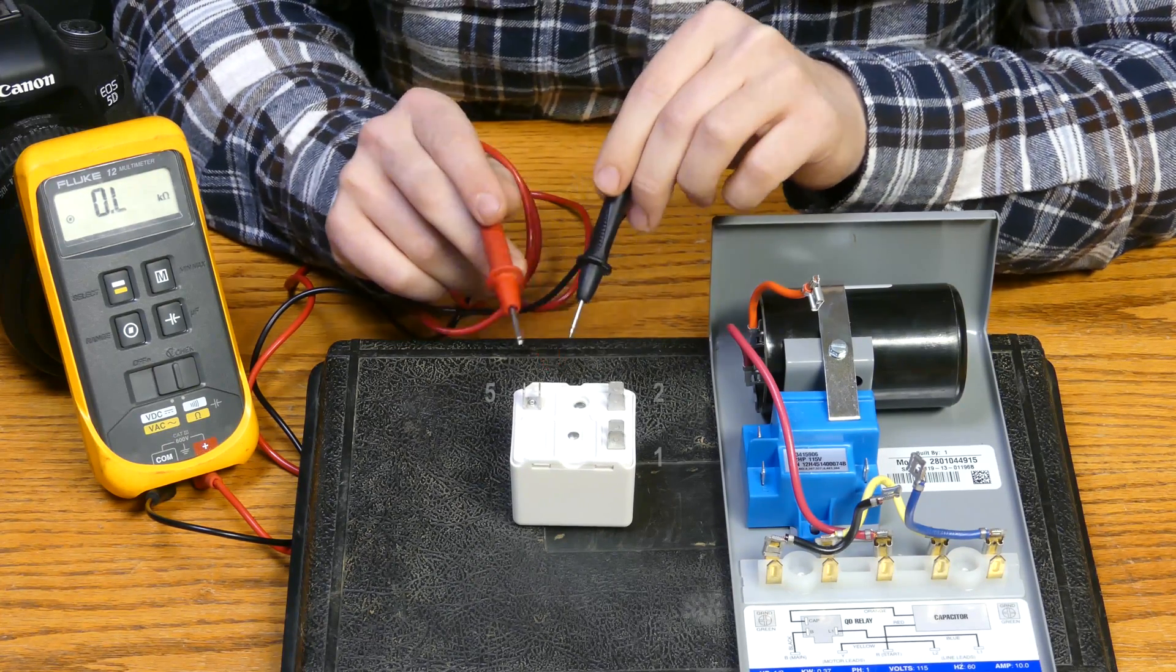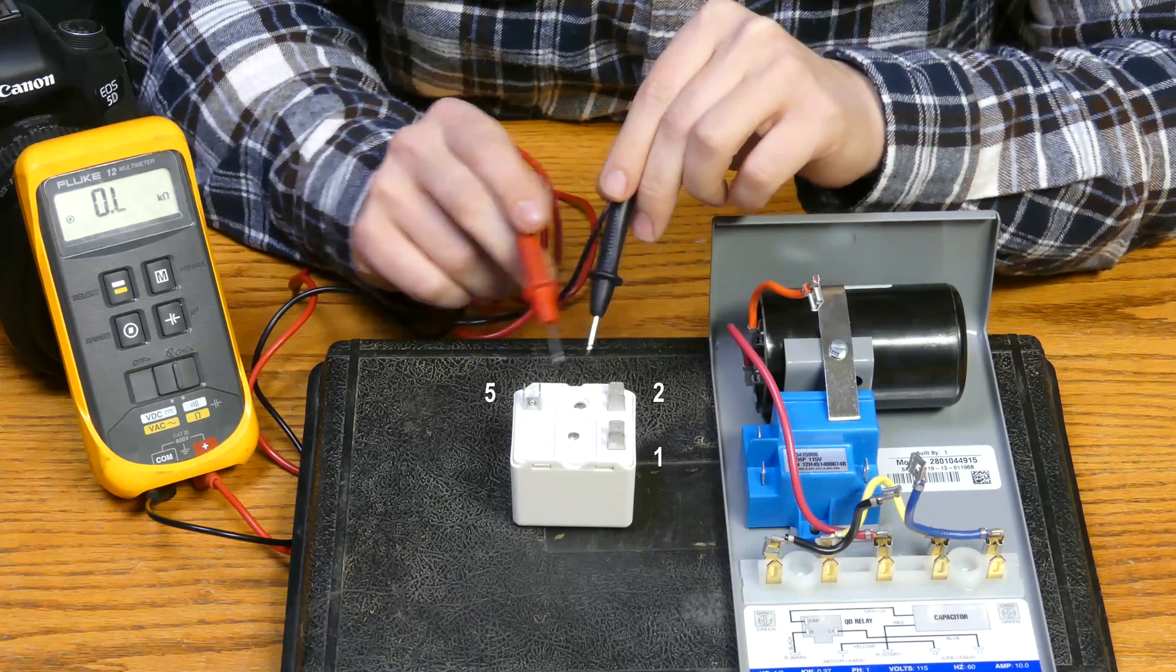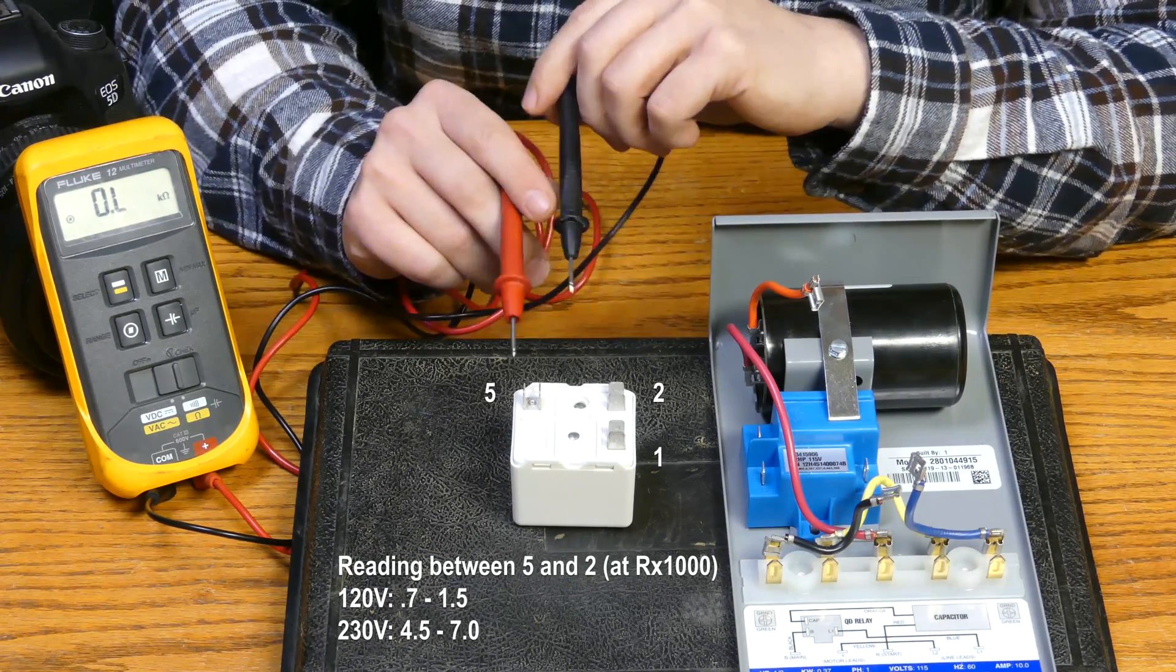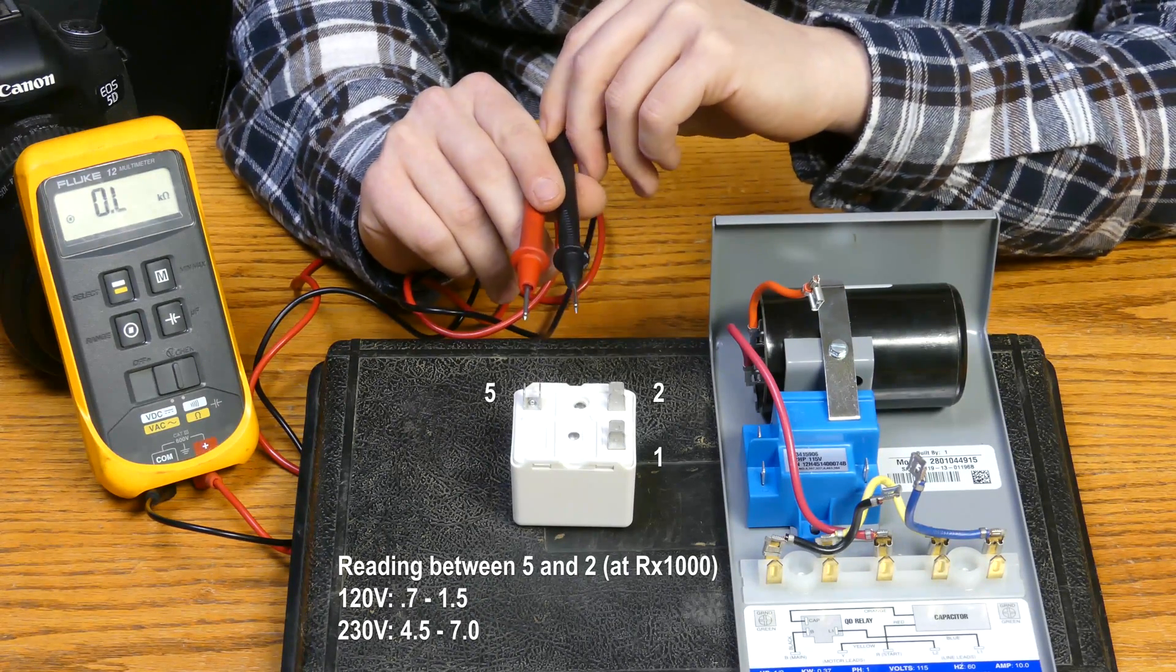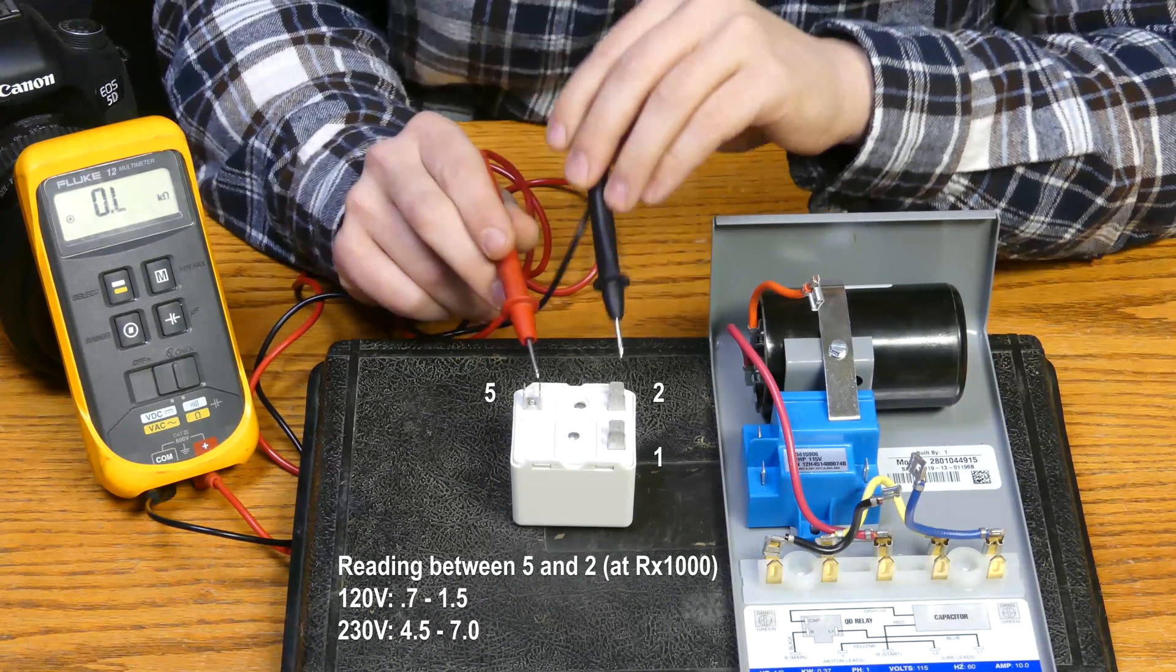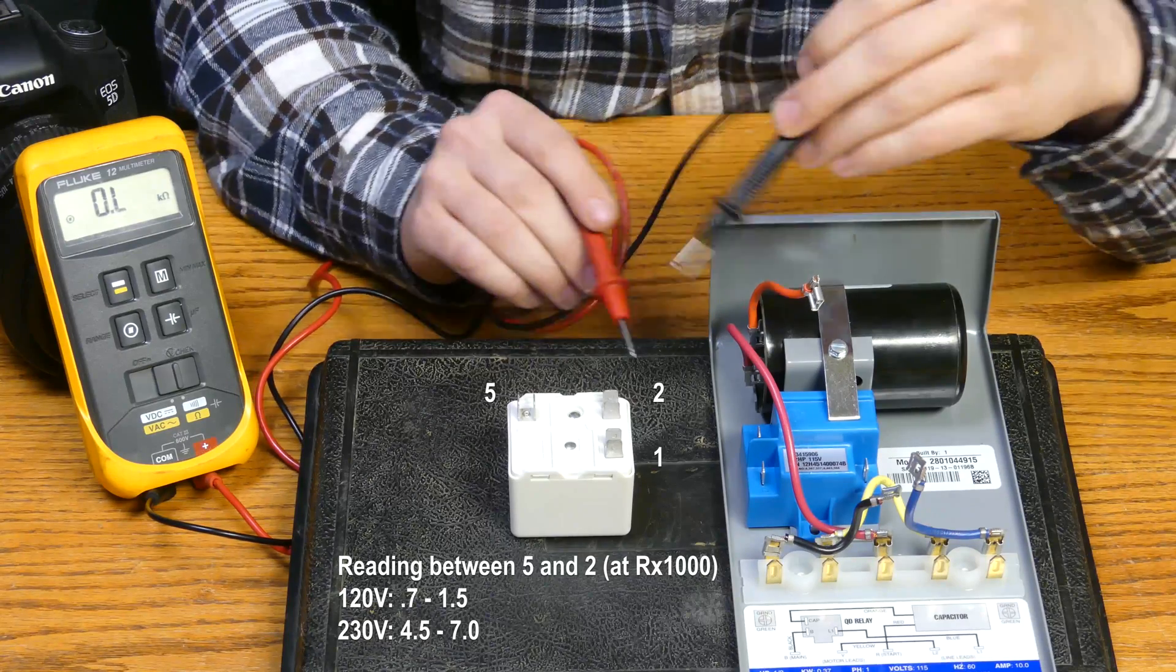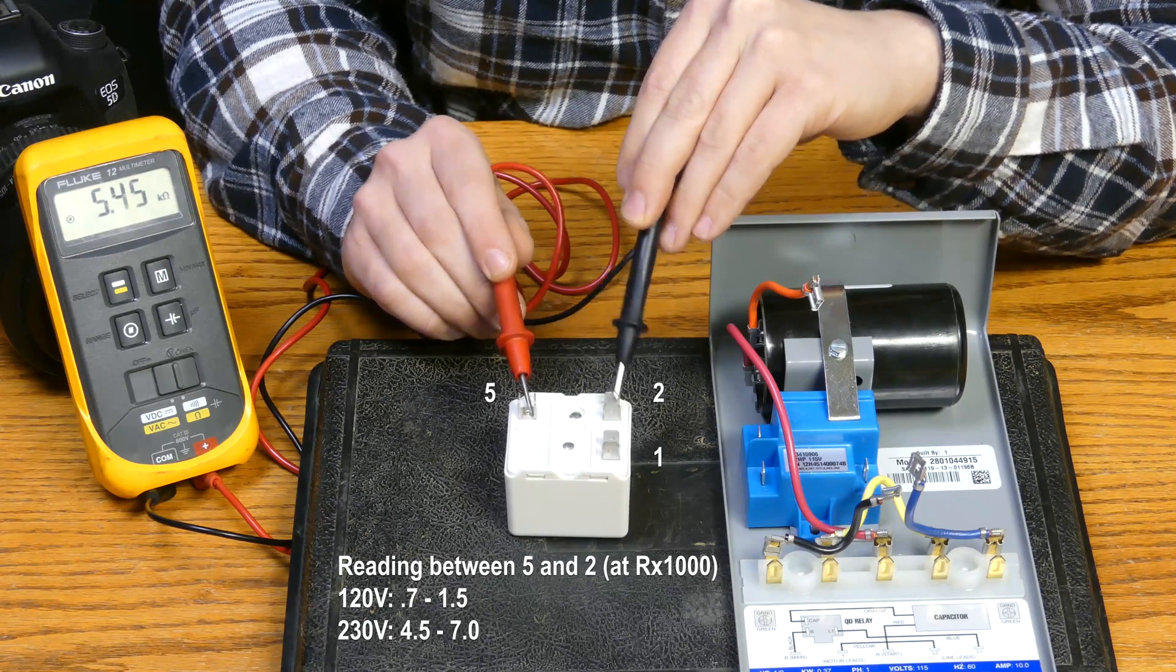So we're going to first start by testing this one here, and we're going to test between number five and number two. What we're looking for here is a number on 120 volt systems between 0.7 and 1.5, and then on 230 volt systems we're looking for a number between 4.5 and 7.0. So let's see what we get. 5.45. So we're right in the range, we know we're good there. So just remember that's between 5 and 2 and we're looking for that number.